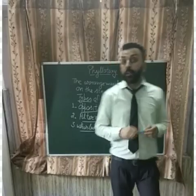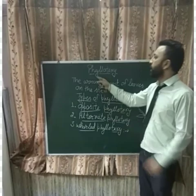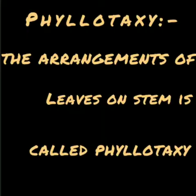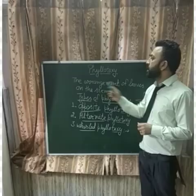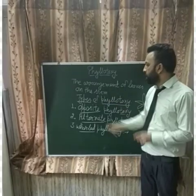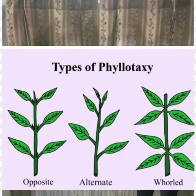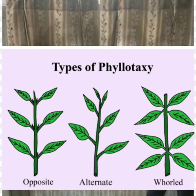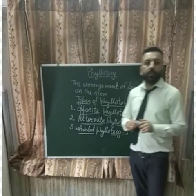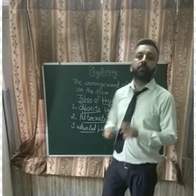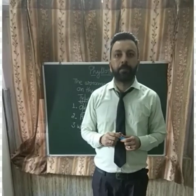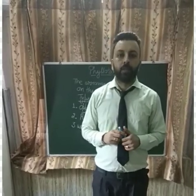So students, today we have discussed about Phyllotaxy. Phyllotaxy means the arrangement of leaves on the stem, and it is of three types: Opposite Phyllotaxy, Alternate Phyllotaxy, and Whorled Phyllotaxy. Enough for today — thanks, have a great time, take care, and stay healthy. Thank you.